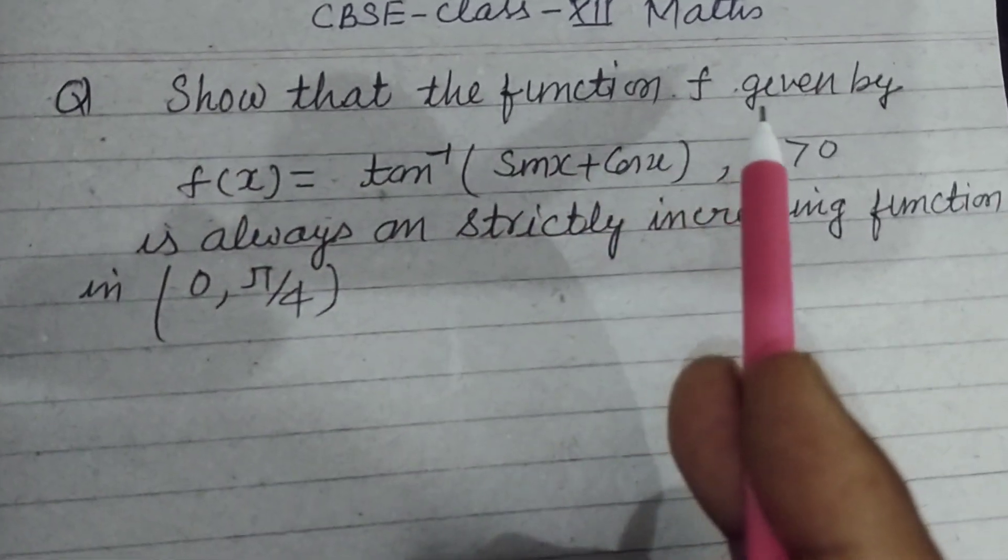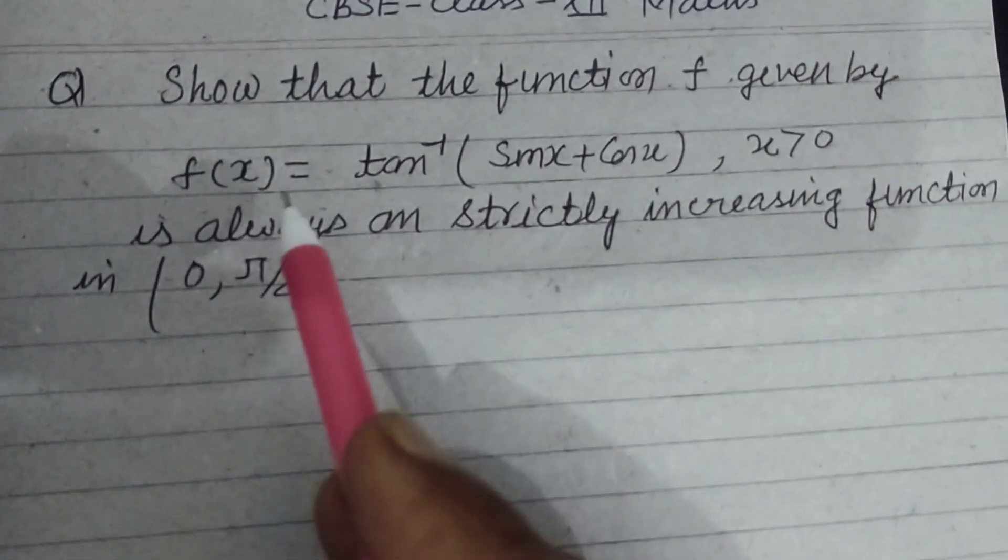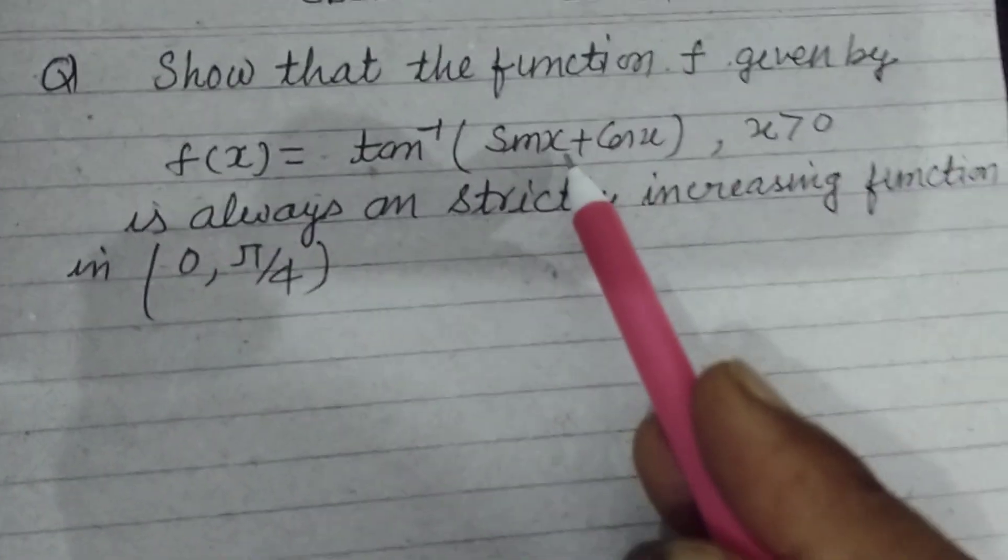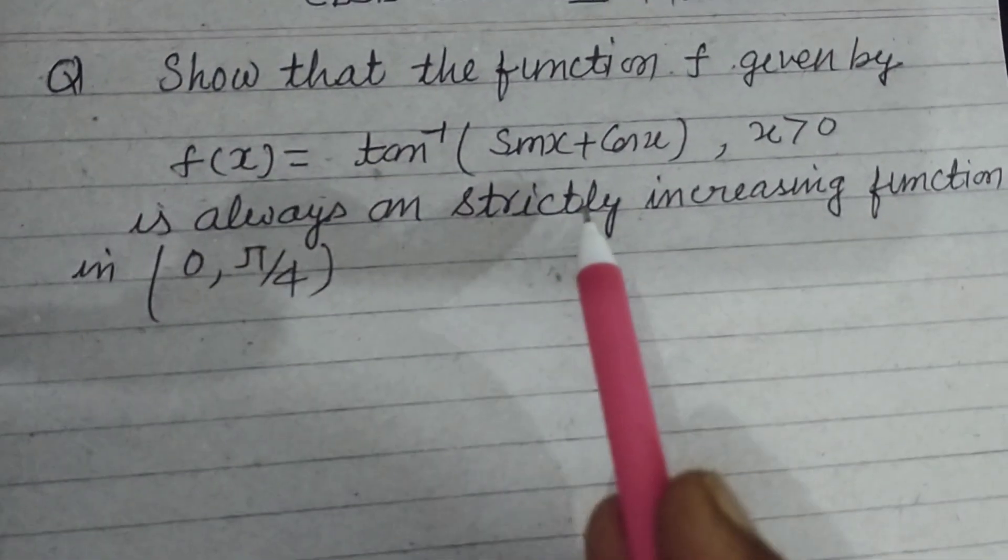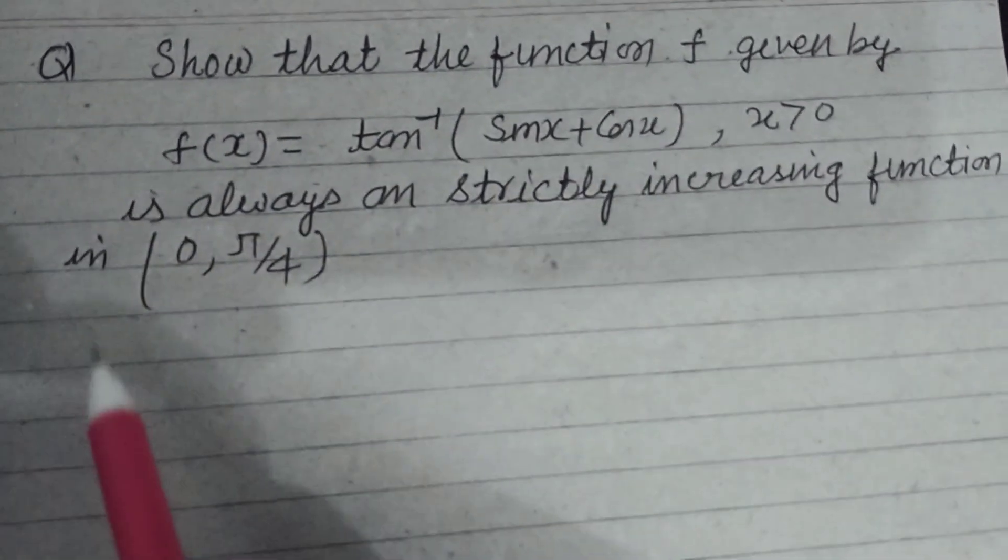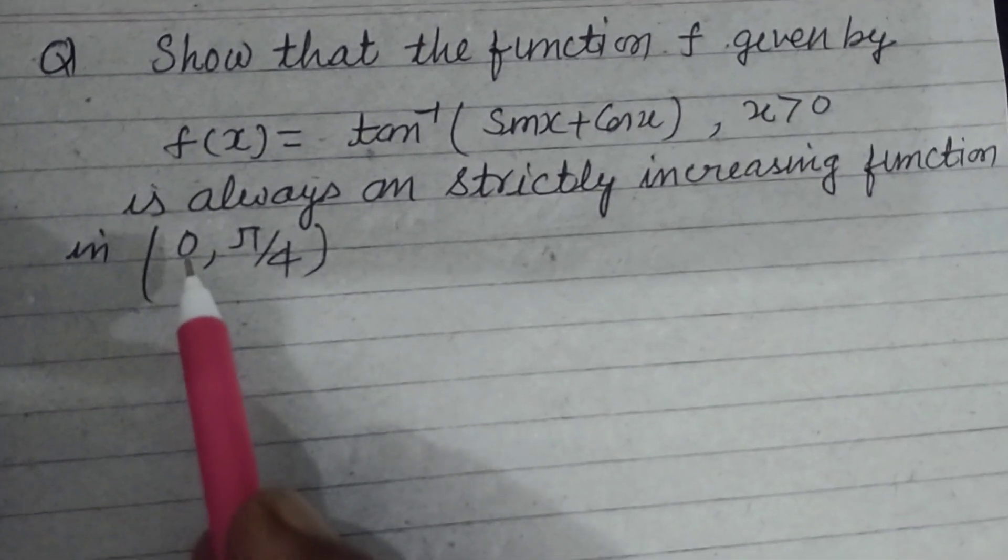Show that the function f given by f(x) = tan inverse (sin x + cos x), where x is greater than 0, is always a strictly increasing function in the interval [0, π/4].